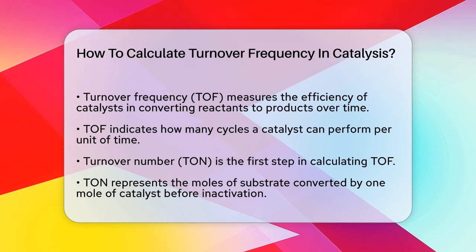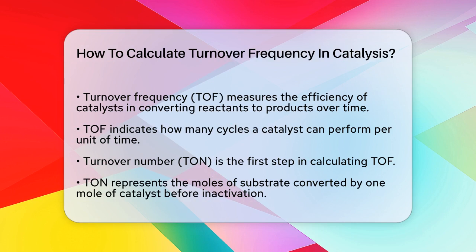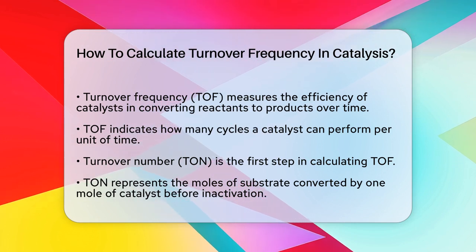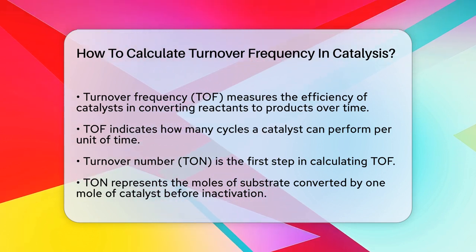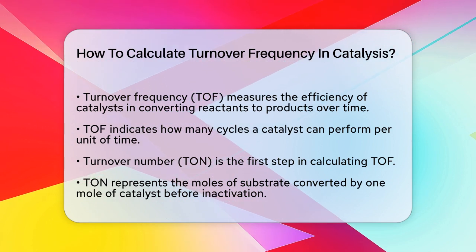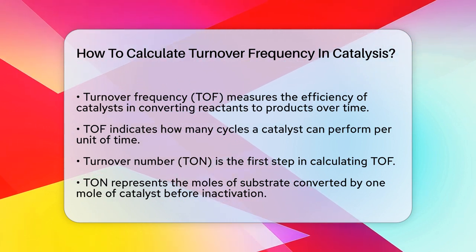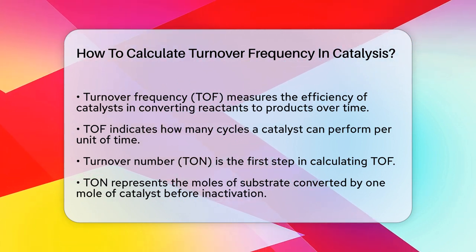First, let's define what turnover frequency, or TOF, is. It's a measure of how many cycles a catalyst can perform per unit of time. Essentially, it tells you how efficient a catalyst is in converting reactants into products over a given time period.